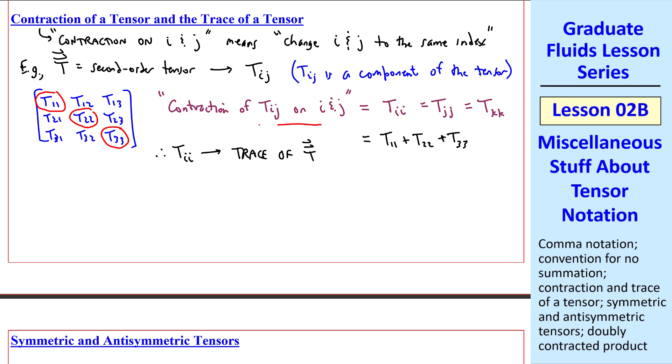Therefore, tii represents the trace of t, where you hopefully remember that the trace of a tensor like this is simply the sum of all the diagonal components, which is exactly what we're doing here.